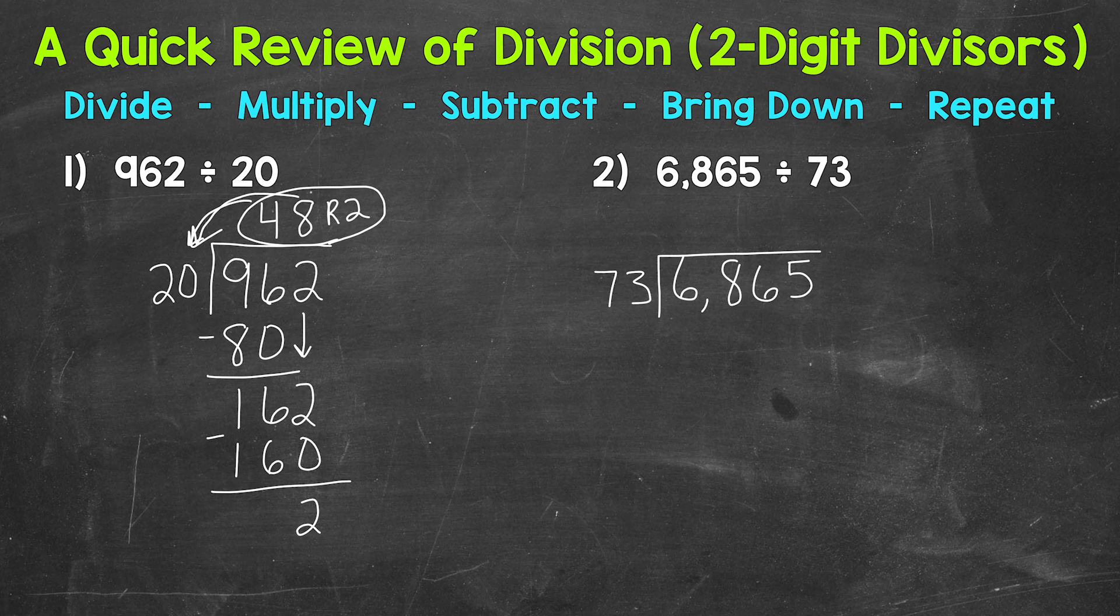We have 6 divided by 73. How many whole groups of 73 are in 6? We can't do that. So we go to the next digit. We have an 8. So we take a look at 68. How many whole groups of 73 are in 68? We can't do that either. So we need to go to the next digit over, which is another 6. So we have 686 divided by 73. So we need to figure out how many whole groups of 73 are in 686.